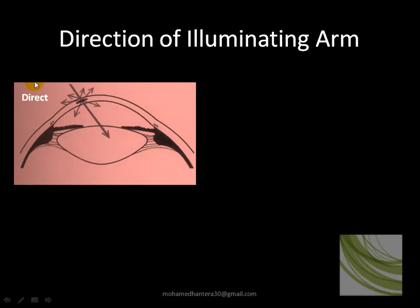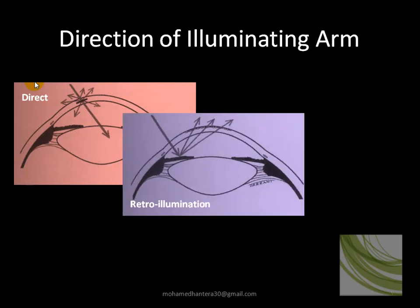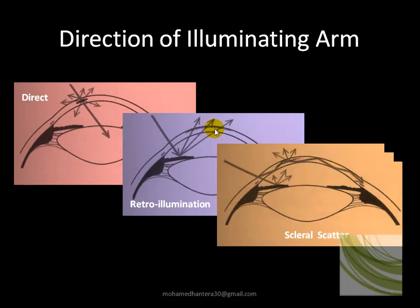With direct illumination, the angle between the two arms is zero. With retro illumination, we can use the fundus to see the cataract, or the iris to evaluate tiny vesicles in the epithelium. You can also illuminate the limbus to create total internal reflection inside the cornea, which acts as a mirror to reveal subtle opacities — this is called scleral scatter, though technically it is limbal scatter.